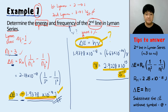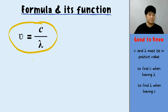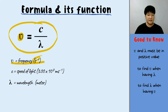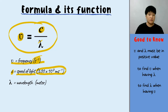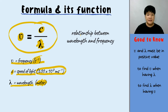Another formula: mu equals C over lambda, showing the relationship between wavelength and frequency. C is the speed of light, a constant of 3 times 10 to the power of 8 m/s. Lambda is wavelength and must be in the unit of meters. If you have wavelength you can find frequency, and vice versa. Be careful with units — lambda must be in meters.